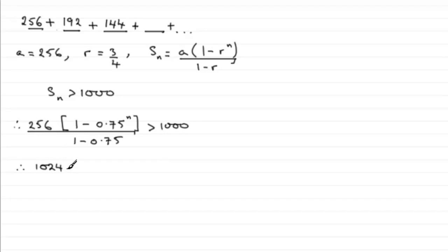1024 then multiplied by 1 minus 0.75 to the power n, which is greater than a thousand. Then what would I want to do? I think we'll divide both sides by 1024 at this stage.